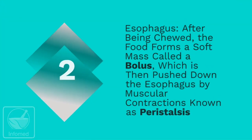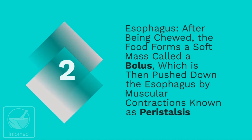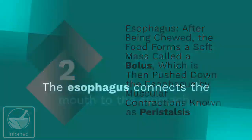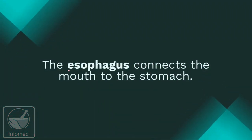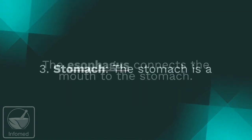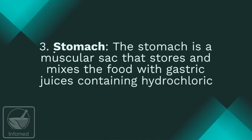Enzymes like amylase initiate the digestion of carbohydrates. Number two: the esophagus. After being chewed, the food forms a soft mass called a bolus, which is then pushed down the esophagus by muscular contractions known as peristalsis. The esophagus connects the mouth to the stomach.